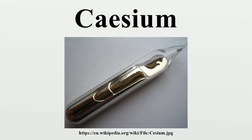The German chemist Robert Bunsen and physicist Gustav Kirchhoff discovered cesium in 1860 by the newly developed method of flame spectroscopy. The first small-scale applications for cesium were as a getter in vacuum tubes and in photoelectric cells.